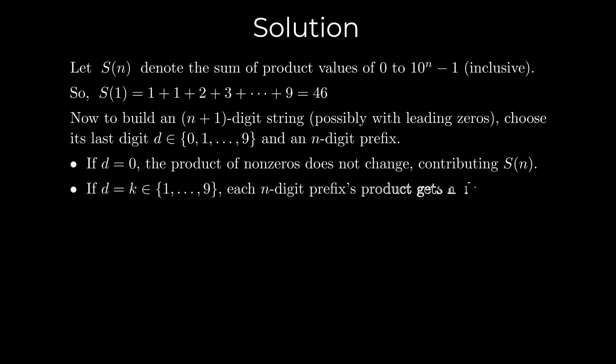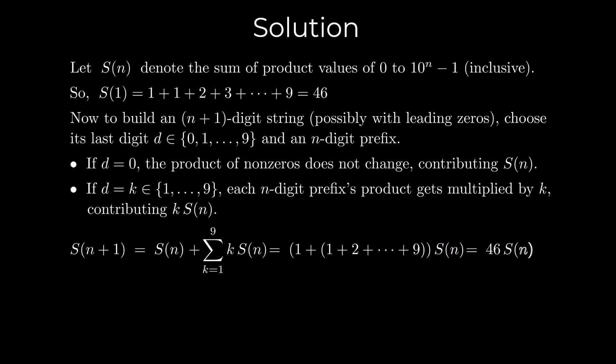If the last digit is not 0, each n digit prefix's product gets multiplied by k, contributing k times S(n). So S(n+1) is equal to S(n) plus summation k times S(n), where k goes from 1 to 9. This is equal to 46 times S(n).